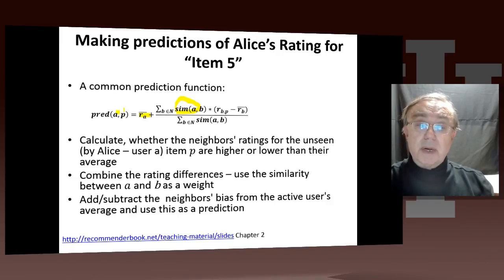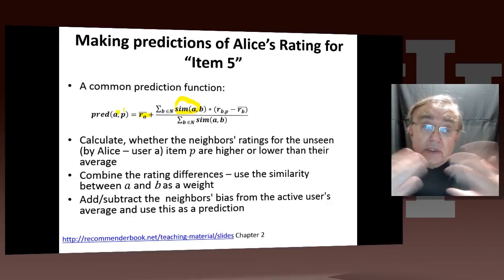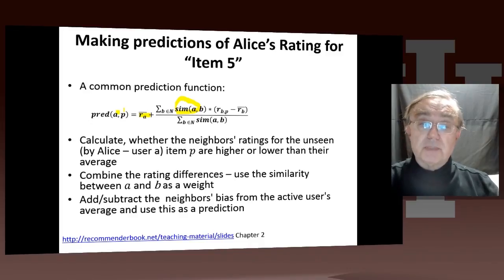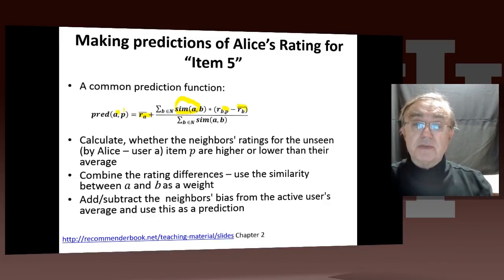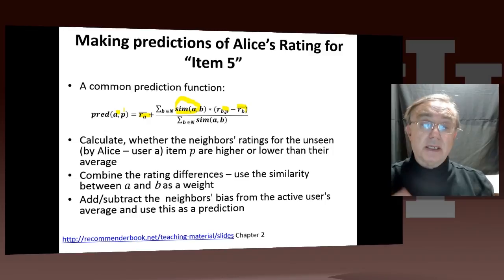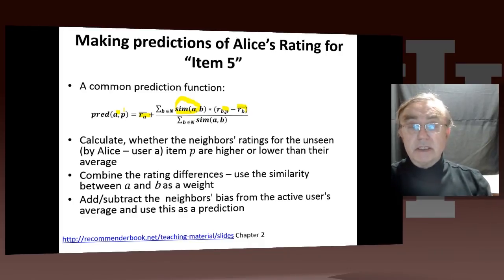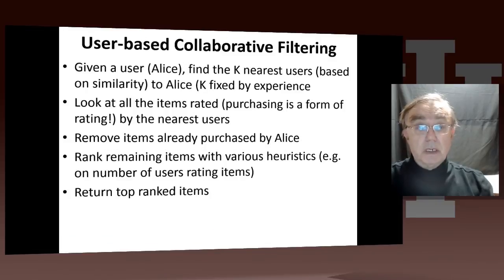We weight it by the similarities, so the ones most similar to Alice get the highest weight. We put in the rating for this person for this item, minus the average rating, in the same spirit as before. We're trying to normalize everything and take out the averages. So this is the prediction for Alice's ranking of item five, and this makes a lot of sense.